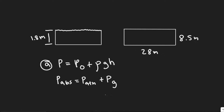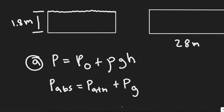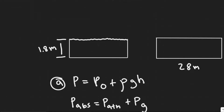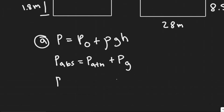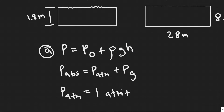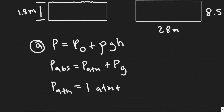For part A, we're trying to find the total force and the absolute pressure. We'll start by finding the absolute pressure at the bottom of the pool. The formula for absolute pressure P is equal to atmospheric pressure plus gauge pressure. Atmospheric pressure is the pressure due to the atmosphere, which at sea level is equal to 1 atmosphere. The gauge pressure is equal to rho times g times h — that's the pressure due to the water at the bottom.